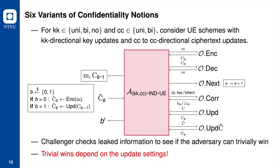We will show that in any security game, if the trivial win conditions in the bidirectional update setting are triggered, then the same trivial win conditions in the unidirectional update settings would be triggered as well. As a result, security notions with uni and bidirectional updates are equivalent.